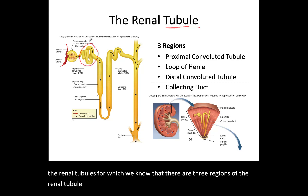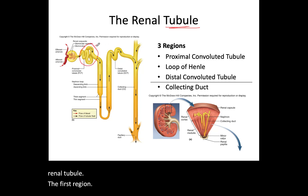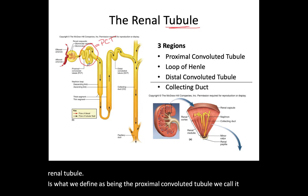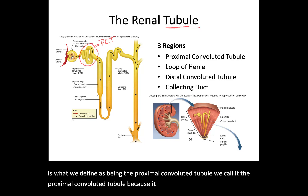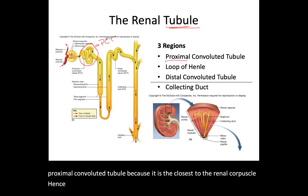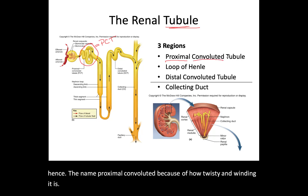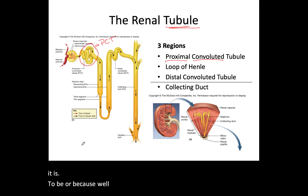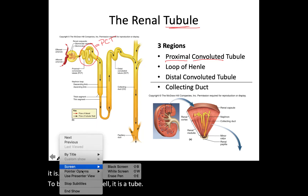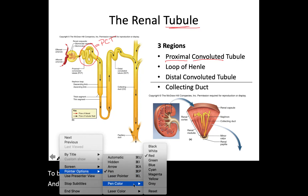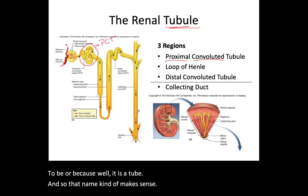The first region is what we define as the proximal convoluted tubule. We call it the proximal convoluted tubule because it is the closest to the renal corpuscle, hence the name proximal. Convoluted because of how twisty and winding it is. Tubule because it is a tube. And so that name makes sense.